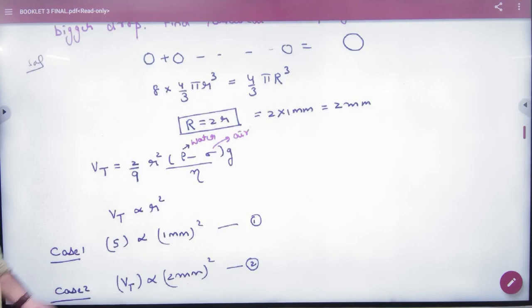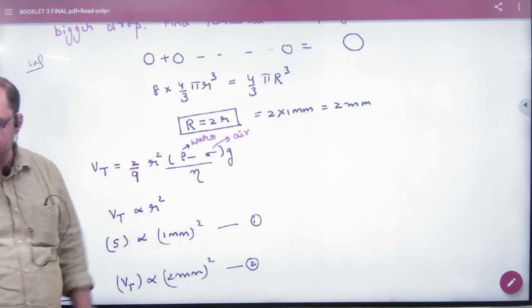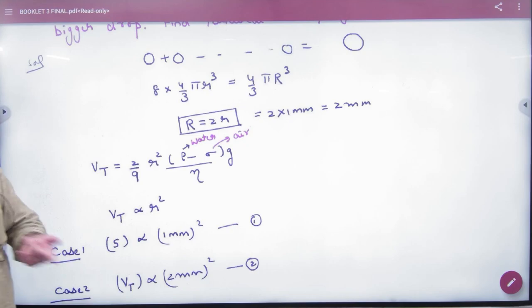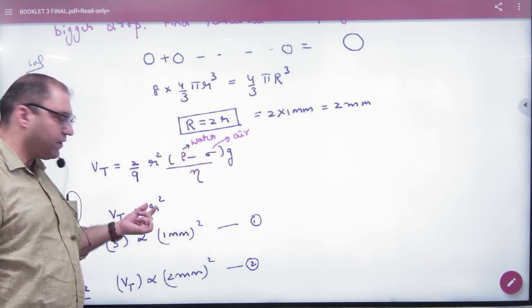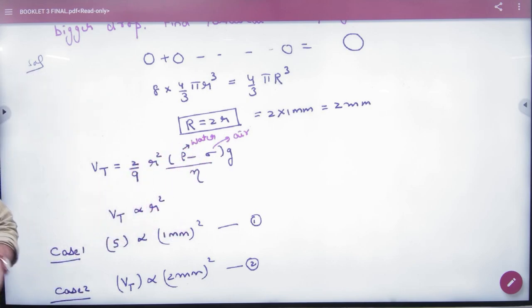We write the terminal velocity formula. The body is water, so density of body is that of water. The medium is air. Whether small or big drop, density, g, and η are the same - only r is different. So terminal velocity is directly proportional to r².